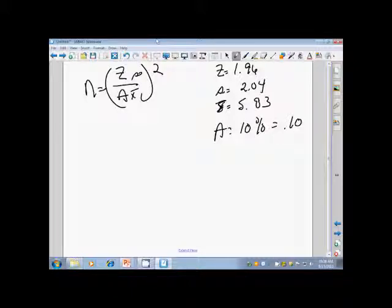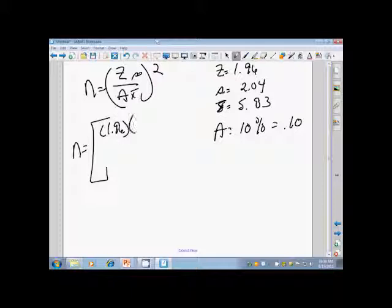I call this plug and play. We're going to take the numbers we have here and plug them into our formula. n is equal to one point nine six times two point zero four divided by point one zero times five point eight three, and I want that whole quantity squared.